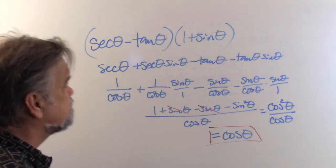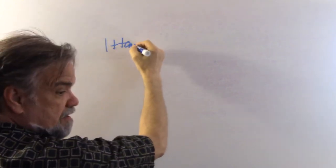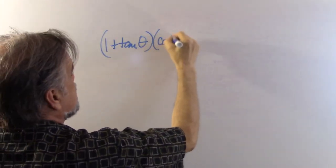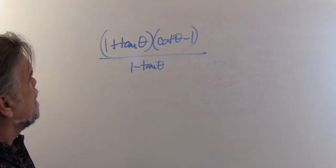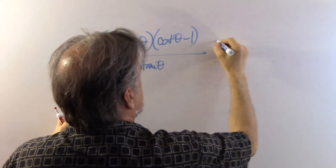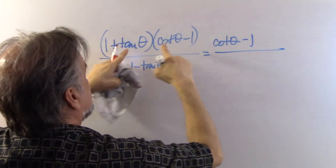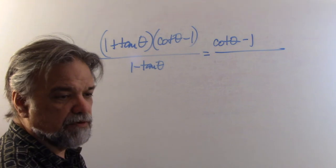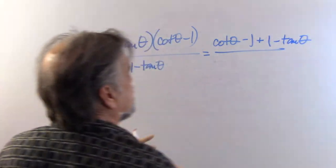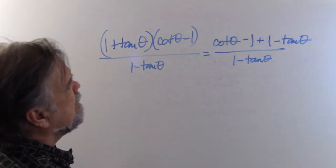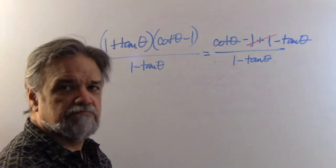Number eight: one plus tangent of theta times cotangent of theta minus one, all over one minus tangent of theta. Multiplying out the numerator: cotangent of theta minus one plus tangent times cotangent minus tangent of theta. Since tangent and cotangent are reciprocals, tangent times cotangent equals one, so minus one plus one cancels. The numerator becomes cotangent minus tangent of theta, over one minus tangent of theta.